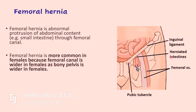Femoral hernia is more common in females. Why? Because the femoral canal is wider in females, and this is because females have a wider pelvis. Therefore the diameter of the femoral ring is greater in females, making the chances of femoral hernia higher in females.